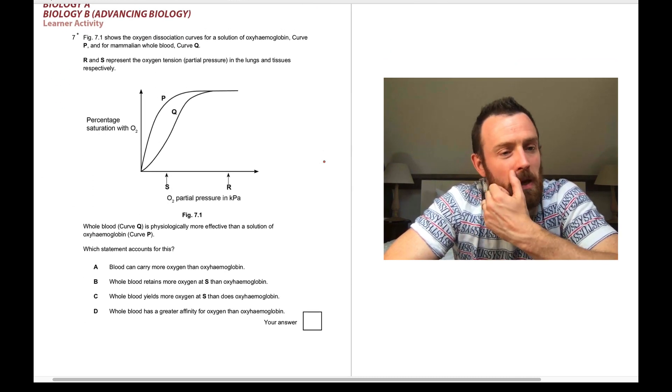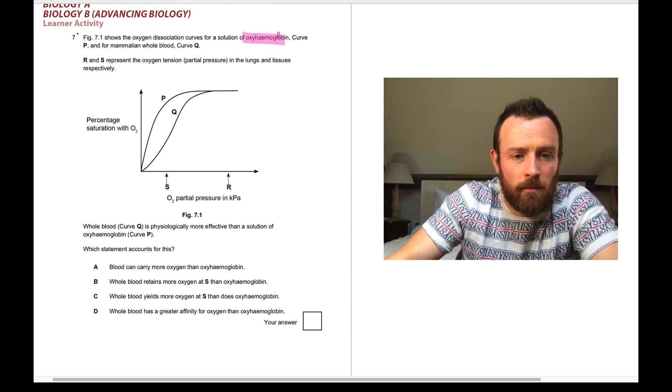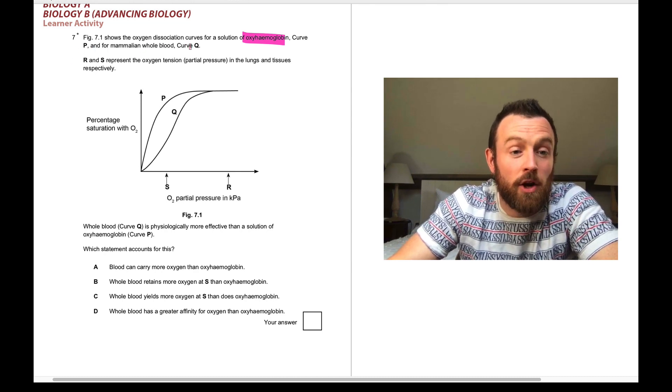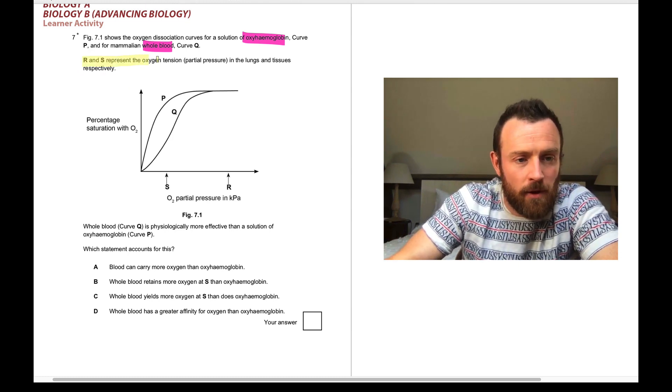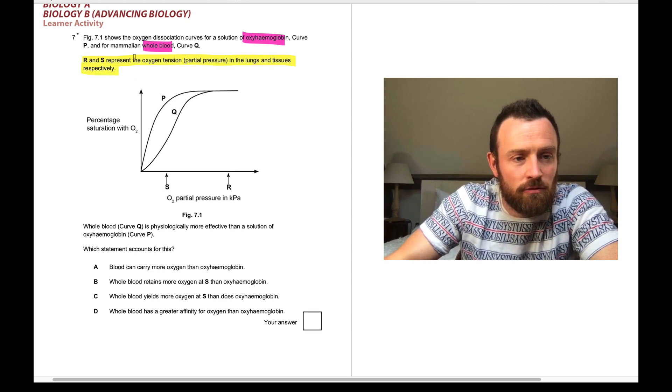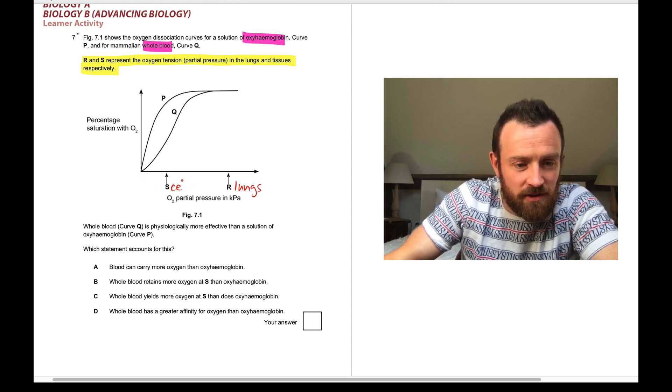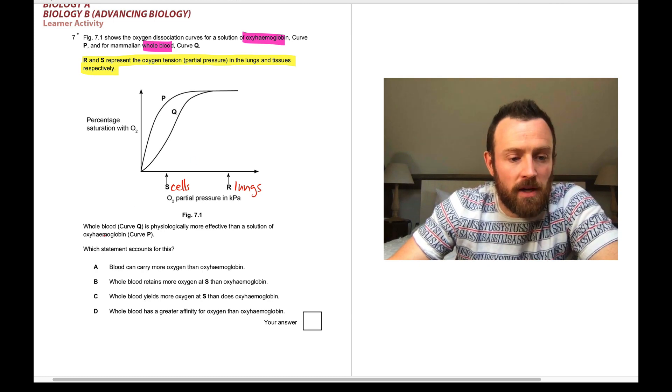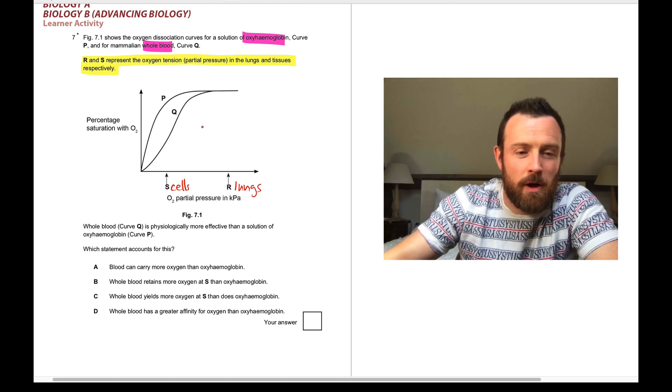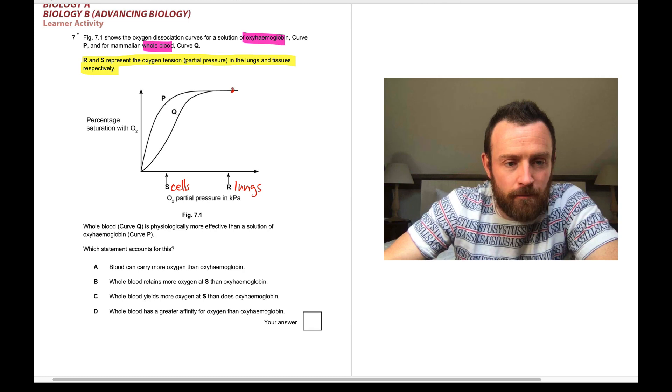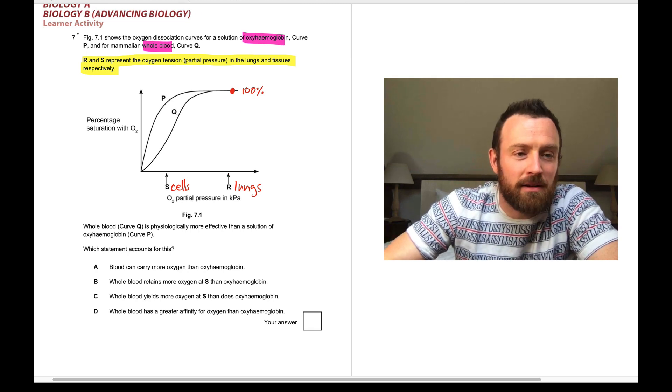Question seven, here we see the oxygen dissociation curves for a solution of oxyhemoglobin, curve P, and for mammalian whole blood, curve Q. R and S, this is important actually, R and S represent the oxygen tension in the lung and tissue respectively. So R is lungs and S is the cells and the tissue. So whole blood is physiologically more effective than a solution of oxyhemoglobin. Why is that?